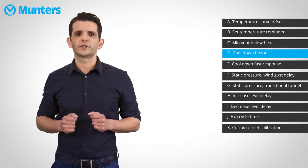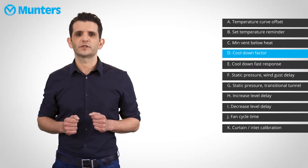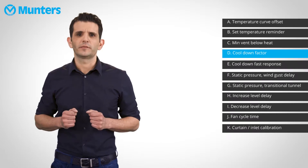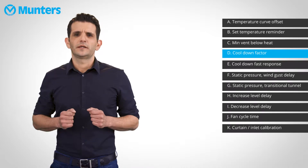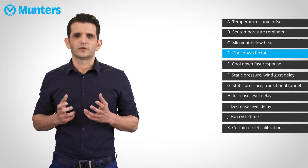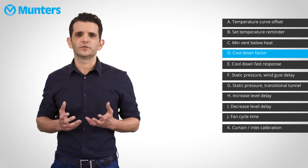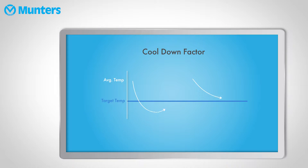It is extremely important to make sure the changes in your ventilation are done carefully. Imagine you are in a car and your leg is on the gas pedal. In the distance you see an obstacle. What is the first thing you do? Take your leg off the gas. That's cooldown factor. The objective of the cooldown factor parameter is to delay the levels from increasing when the temperature is decreasing but is still above target, in order to prevent overshooting below target.